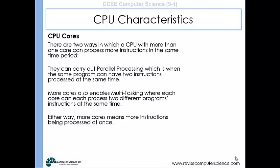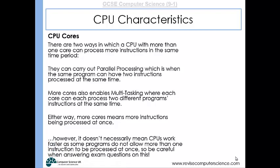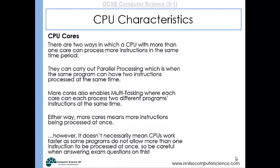Either way, more cores means more instructions can be processed at once, so generally your CPU should be able to get through data quicker. However, not all programs allow for more than one of their instructions to be processed simultaneously. It's important to recognise that although you might have more cores, if the software isn't written to make use of parallel processing, it's still only going to process one instruction at a time.